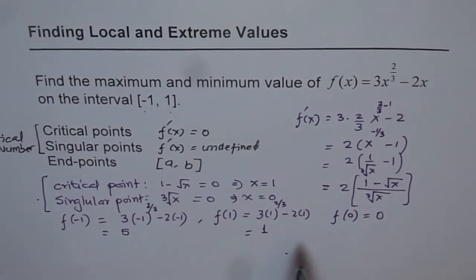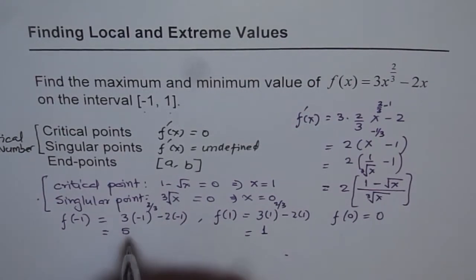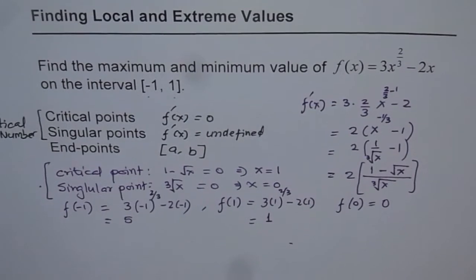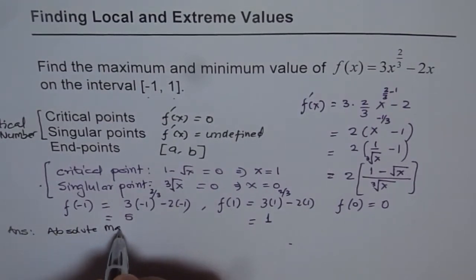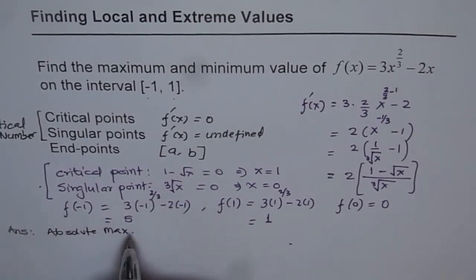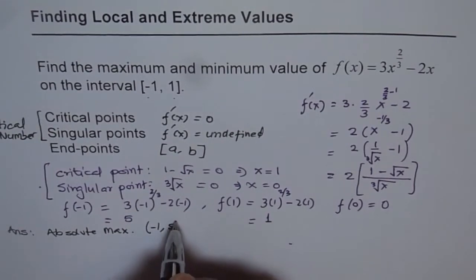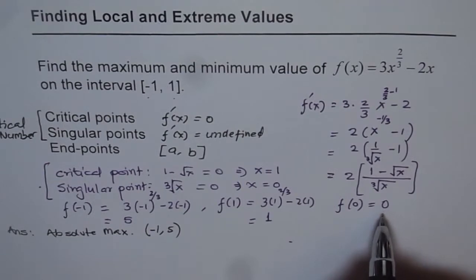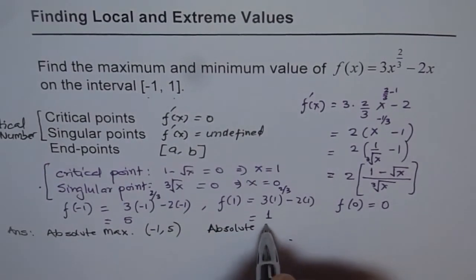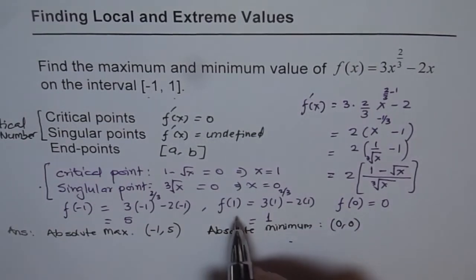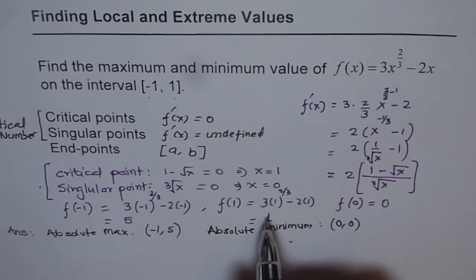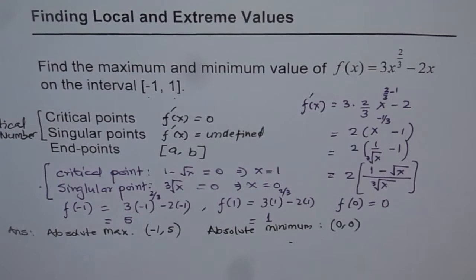From these points, we can see that the absolute maximum is at f(-1) = 5, so the absolute maximum is at the point (-1, 5). The lowest value is 0, so the absolute minimum is at (0, 0), the origin. The value at x = 1 is an endpoint, not a turning point, so we do not call it a local maximum or minimum. We have absolute maximum and minimum in this case.